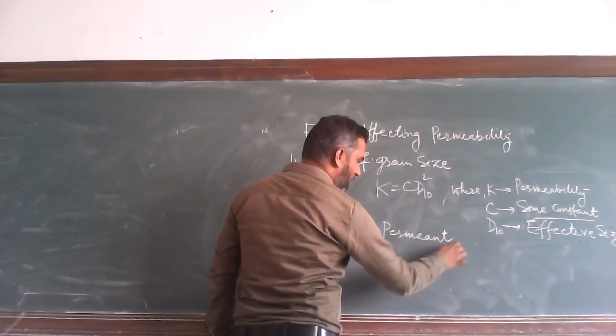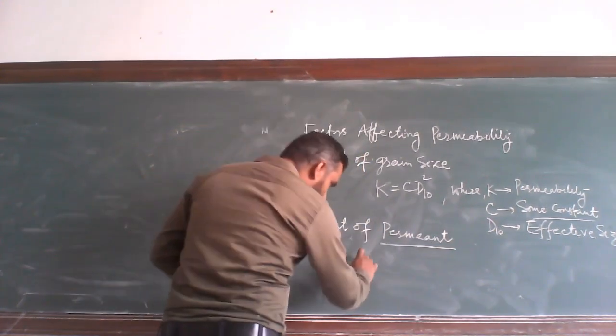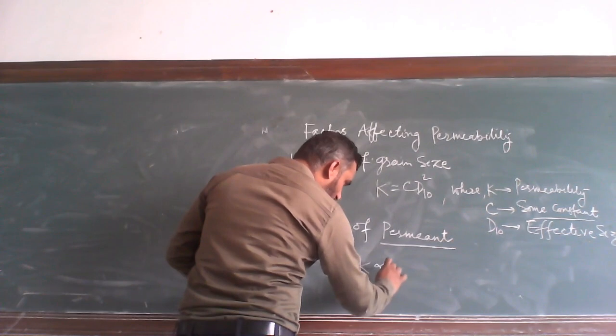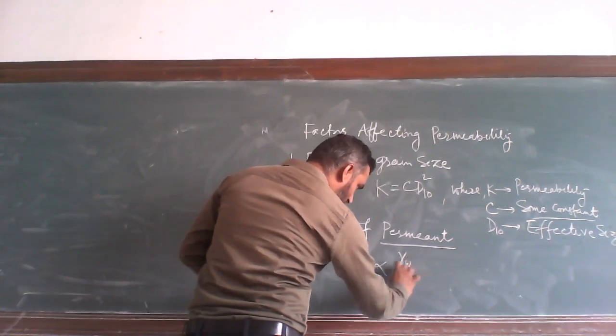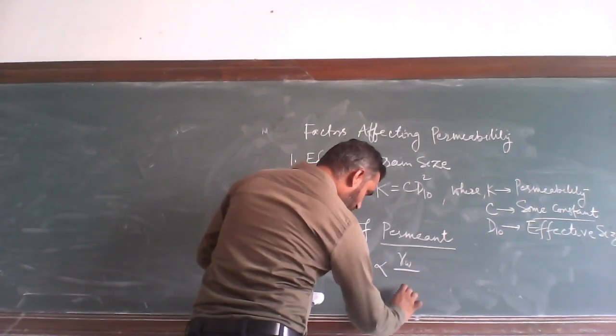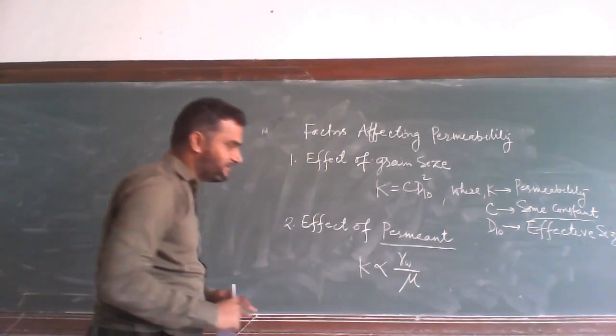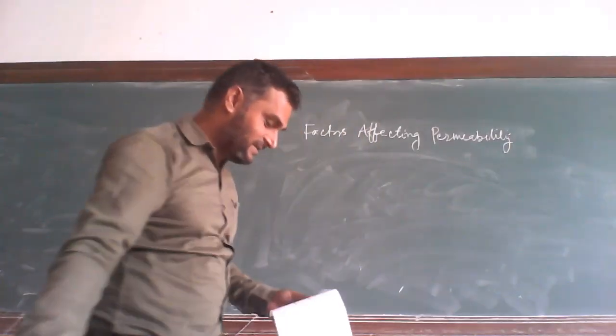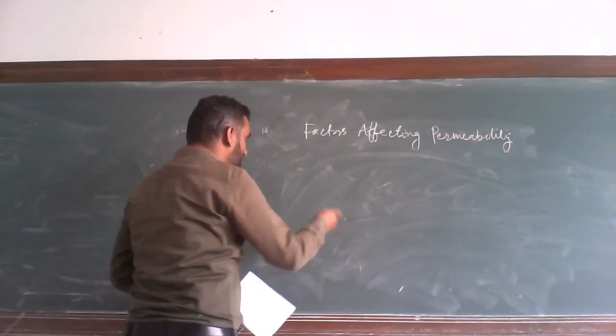Effect of Permeant, and this is related to gamma w by viscosity. And here is viscosity. And third is Effect of Void Ratio.